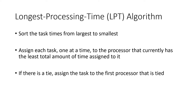We start by sorting the task times from largest to smallest. Then we assign each task one at a time to the processor that currently has the least total amount of time assigned to it. Rather than tracking remaining space, since there's no set capacity, we look at how much has already been assigned to each processor. If there's a tie, assign the task to the first (lowest-numbered) processor that is tied.